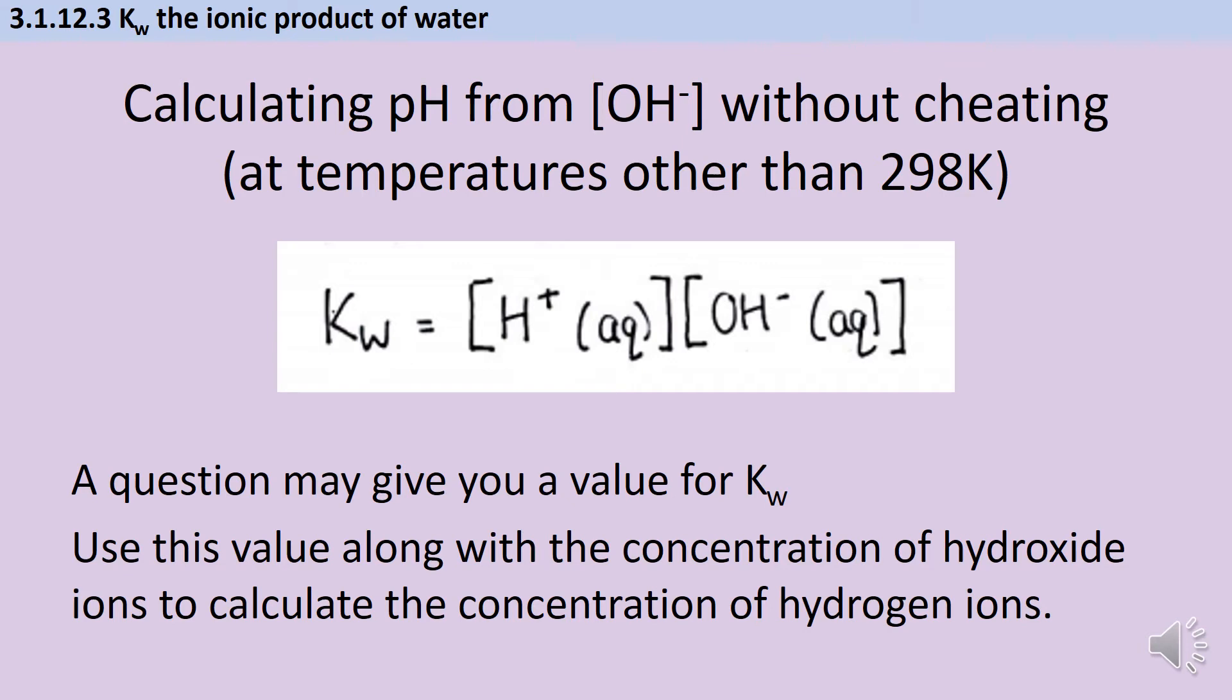But if we've got any temperature other than 298 Kelvin, we can't use that method, and instead we need to use the ionic product of water. Usually you'll be given the value for KW for a particular temperature, and you can use this value along with the concentration of hydroxide ions to calculate the concentration of hydrogen ions, and then we can use our traditional method for calculating pH.